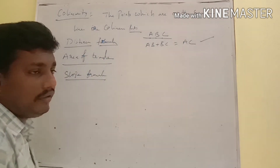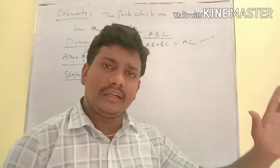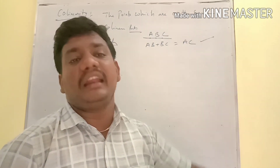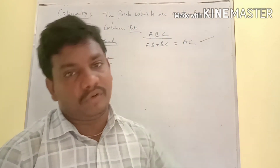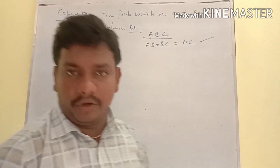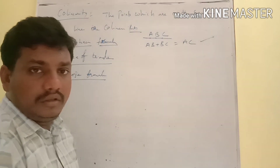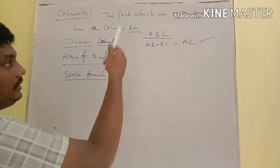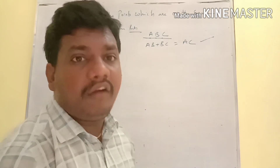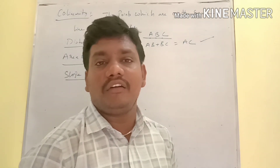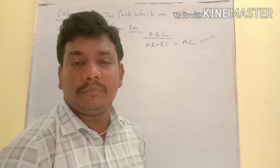Coming to the area of triangle method: when the given three points are collinear, they do not form a triangle, because a triangle is formed only by non-collinear points. If the area of triangle is 0, then the three points are collinear — we can conclude that the three points are collinear.